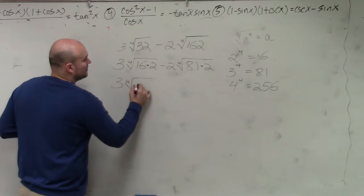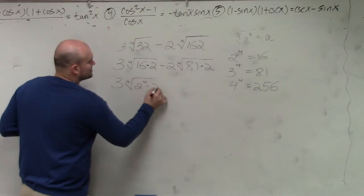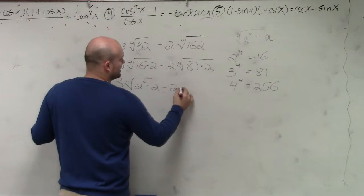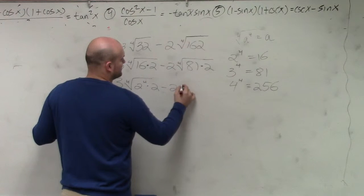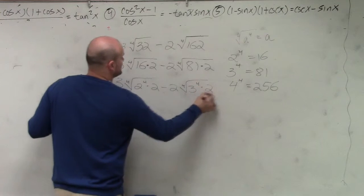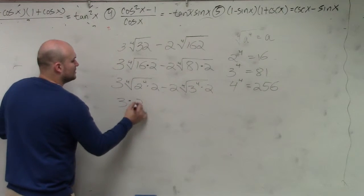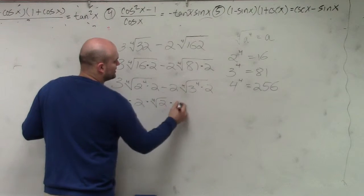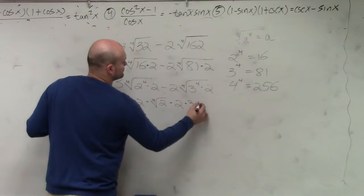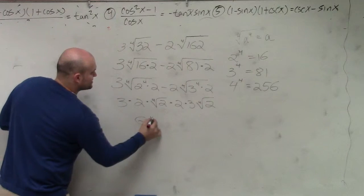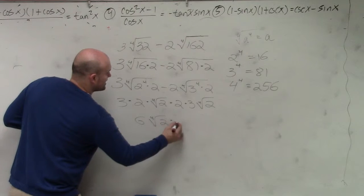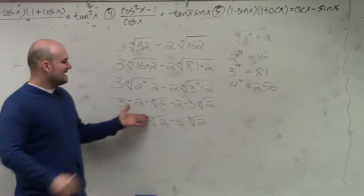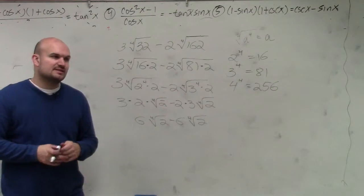So that's the 4th root of 2 to the 4th power times 2, minus the 4th root of 3 to the 4th power times 2. The 4th root of 2 to the 4th power is 2, and the 4th root of 3 to the 4th power is 3. So this becomes 3 times 2, which is 6, times the 4th root of 2, minus 2 times 3, which is 6, times the 4th root of 2. My index and my radicand are exactly the same — 6 minus 6 is 0.